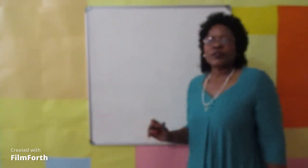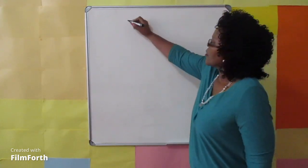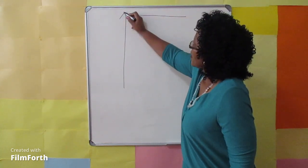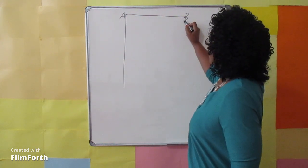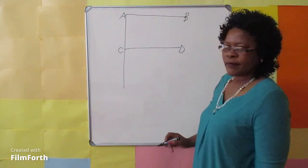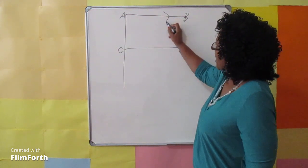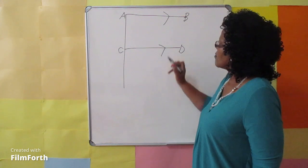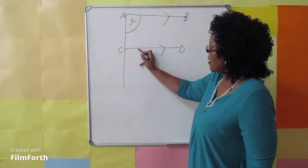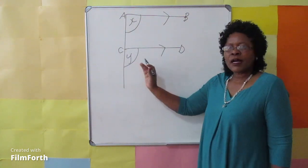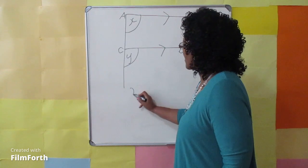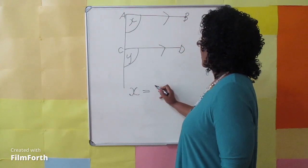Now I am going to draw F shape. A, B line, C, D line. A, B line is parallel to C, D line. Angle X, angle Y are corresponding angles. Y is at the same position as X. Therefore X is equal to Y.